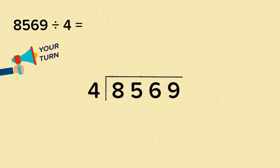Let's go through the answer now. You should have set it out like this and started by dividing the first digit of the dividend by the divisor. So that's eight divided by four, which is two.